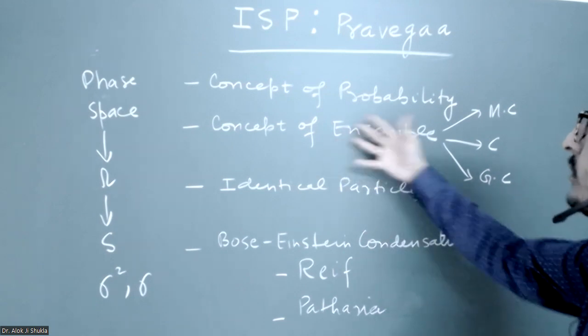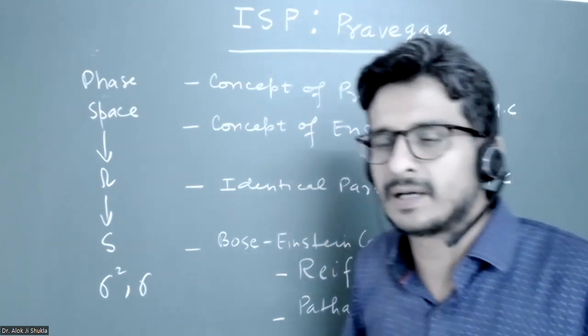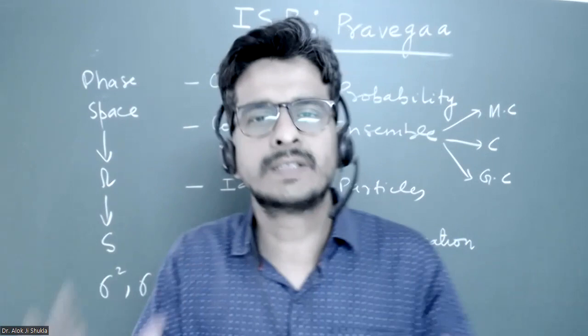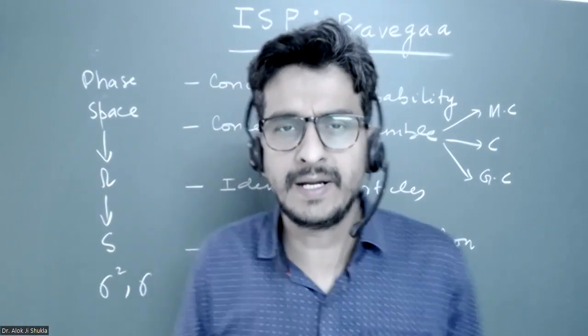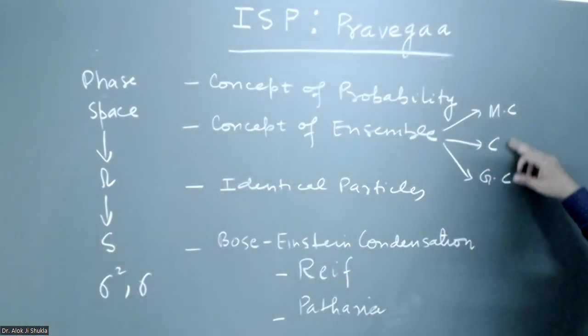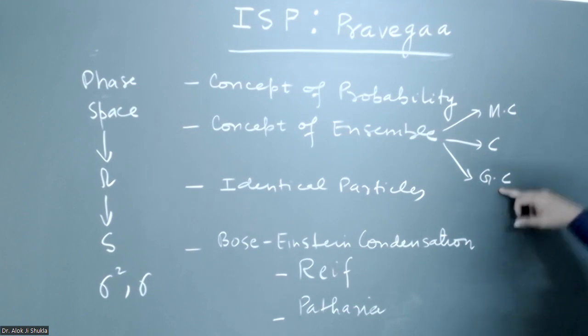And then after that, Gibbs's whole formulation, Ensemble, which they have divided the overall systems into three ways: micro-canonical, canonical and grand-canonical. So this is EVN, this is TVN and this is TVMU.